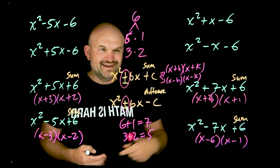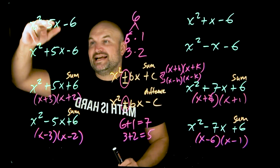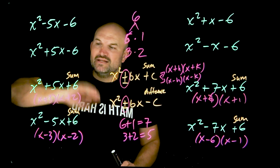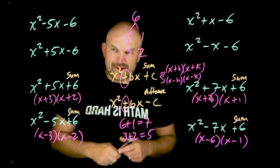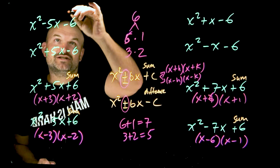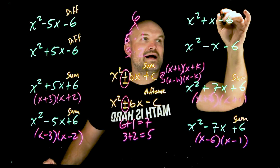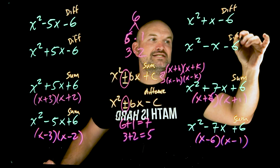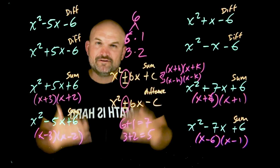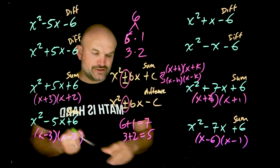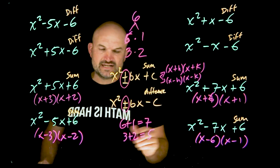Most students get familiar with the sum, but it's the difference that causes all the trouble. That is usually where the mistakes come in. Students will say, I know three plus two adds up to five — but remember, when the last term is negative, this is a difference, not a sum. That is the big mistake students make: they don't recognize the difference. When your constant is negative, you're looking for the difference of your factors.